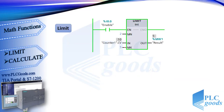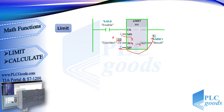The next instruction is LIMIT, used to limit the value at input IN to the values at inputs MN and MX. If the value at the IN input is between MN and MX, it will be copied to the output. For example, if the counter value is 2, 3, 4, or 5 it is copied to the output. But now it is 10, which is greater than MX, so instead of 10 we'll have 5 at the output. If I reset my counter to 0, which is less than 2, the output of this function will be 2.